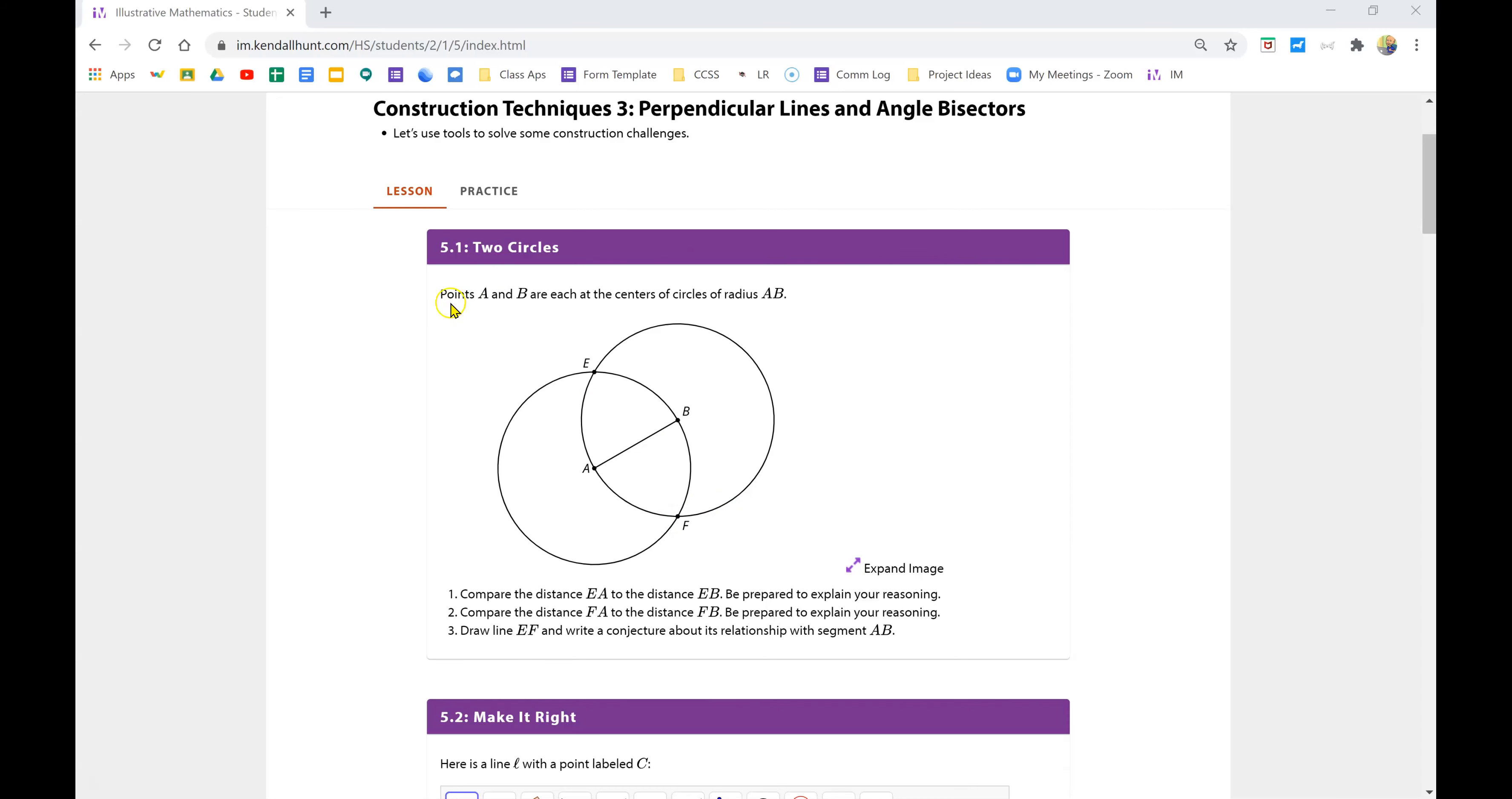The first question says that points A and B are each the centers of the circles. So notice that AB in this picture is the radius of circle A and BA is the radius of circle B, and the two circles intersect. The first question says compare the distance EA to the distance EB. EA is a point here that goes to A and a point here that goes to B. And what you're supposed to notice is that both of those are radii of each of those circles.